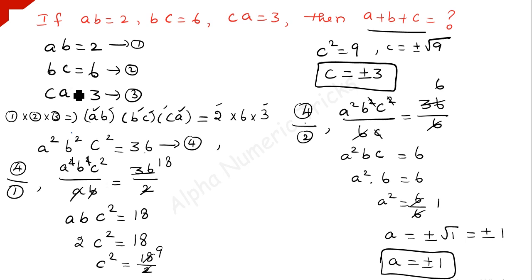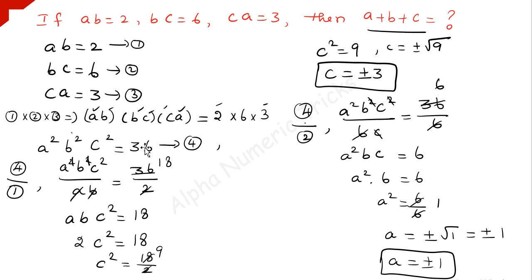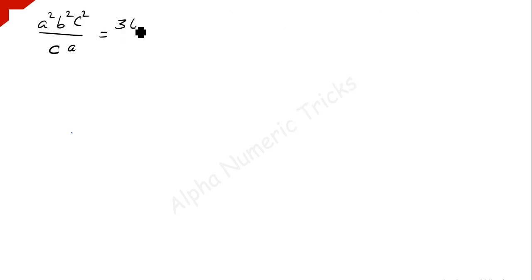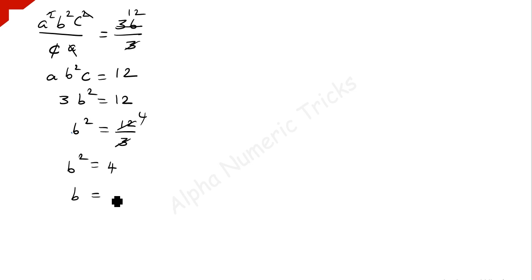Next, we find the value of B by dividing equation 4 by equation 3. Equation 4 is A squared B squared C squared divided by CA, which equals 36 over 3. The A and C terms cancel, leaving AC times B squared equal to 12. But AC is equal to 3, so 3 times B squared equals 12, giving B squared equal to 4. Therefore B is equal to plus or minus 2.